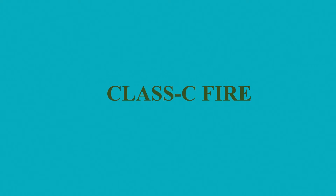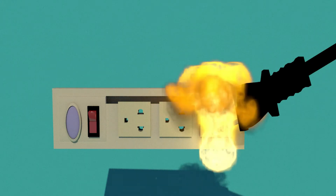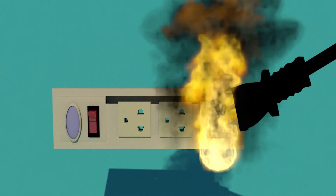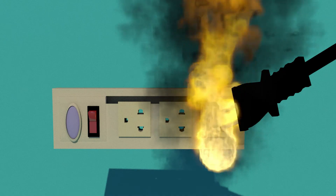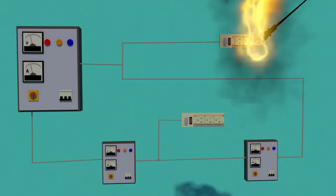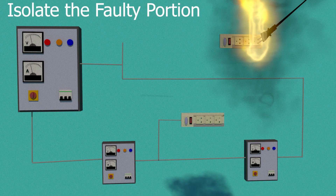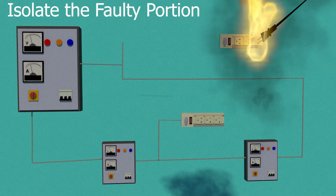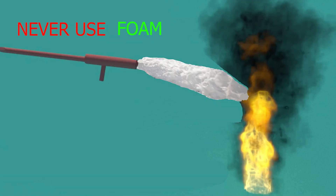Class C fires are caused by energized electrical equipment. These fires can result due to old wiring with weak insulation or due to faulty appliances. These fires are very common. The first step in case of an electrical fire is to isolate the faulty portion from the rest of the system.